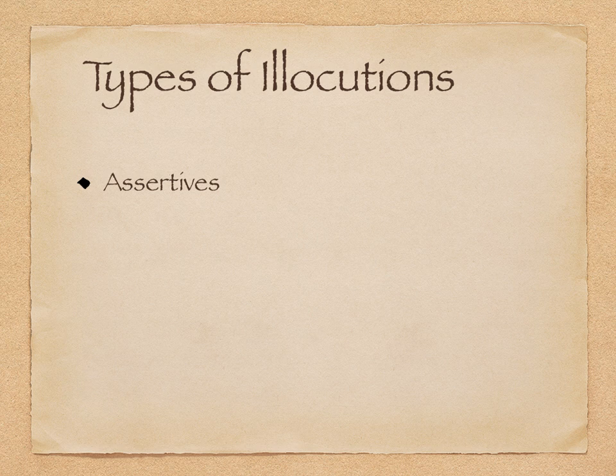The first type of illocution is an assertive — simply a statement about how things are. This might be an information transfer kind of utterance. By the way, 'utterance' is a speech act term for a type of speech, and we'll be talking about utterances as written texts as well, since the same principles apply even to written texts. An assertive as a type of illocution is a statement as to how things are, and that might be in the form of information transfer.